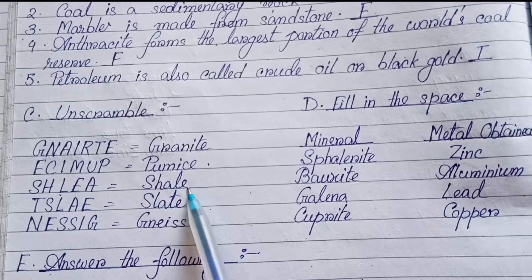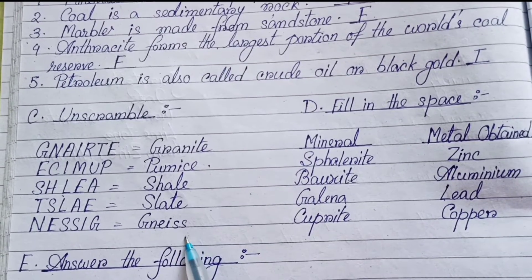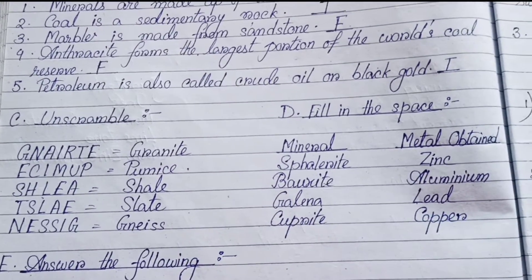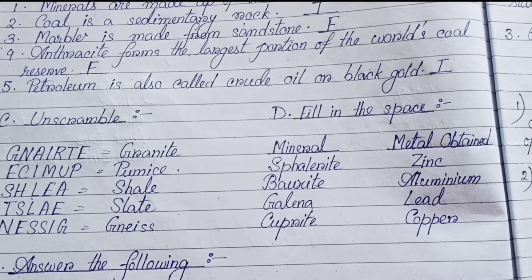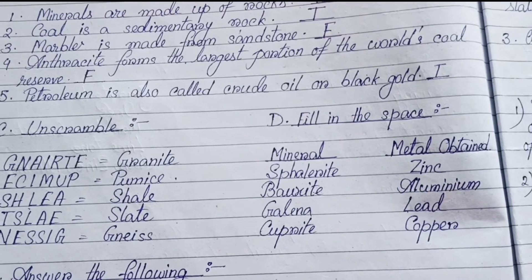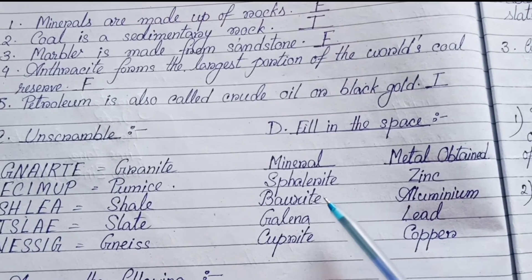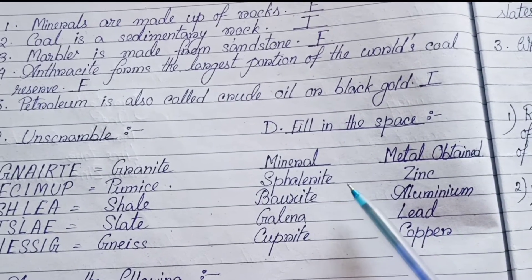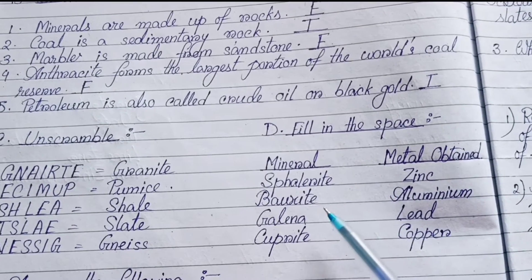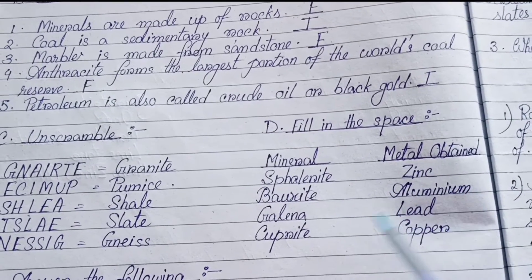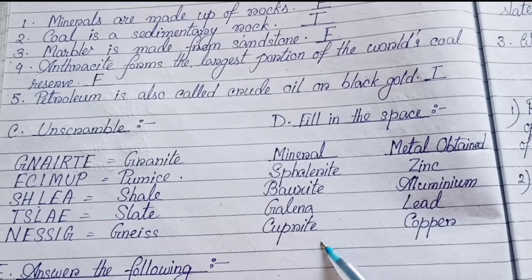Unscramble: Granite, Pumice, Shale, Slate, Gneiss. Fill in the space — Mineral, Metal obtained: Sphalerite — Zinc, Bauxite — Aluminium, Galena — Lead, Cuprite — Copper.